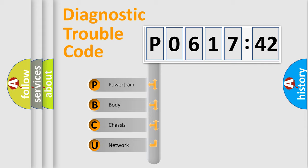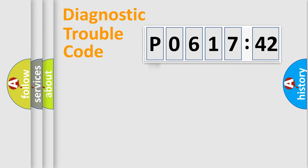If the second character is expressed as zero, it is a standardized error. In the case of numbers 1, 2, 3, it is a car-specific error.